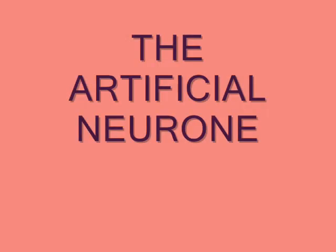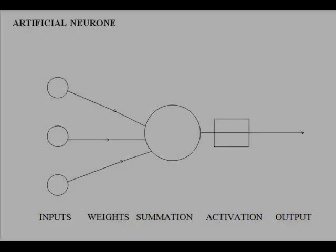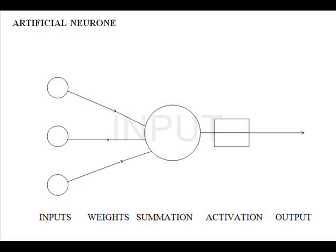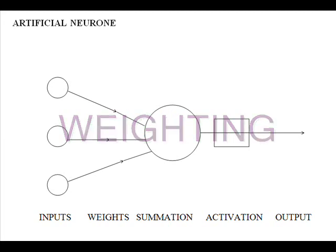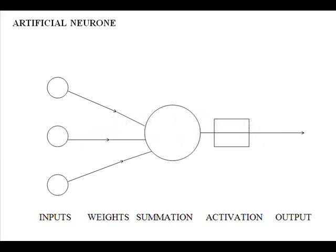These principles are used in the artificial neuron. There is an input, there is a weighting — that is to say, certain inputs are more significant than others.